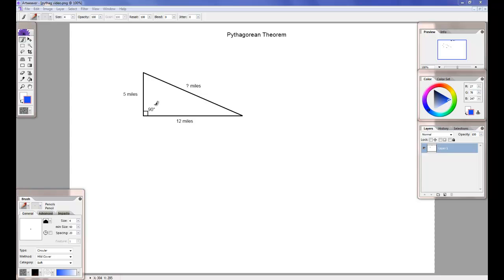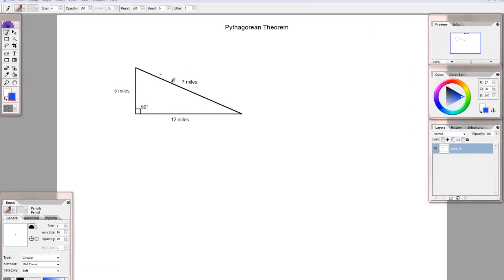In this kind of situation, to find the length of the missing side, you always use something called the Pythagorean Theorem, which will be on your formula sheet that you'll have during the test, and it is a squared plus b squared equals c squared.